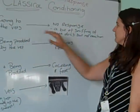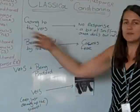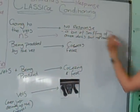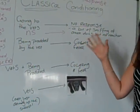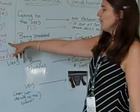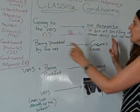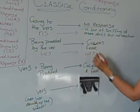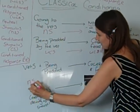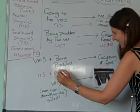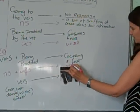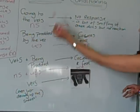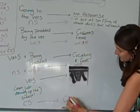Going to the vets to start with produces no response — so that's the neutral stimulus, because nothing is happening. Being prodded by the vet naturally makes the dog fearful, so it's not going to be conditioned because it's a natural, physiological response — that's the unconditioned stimulus, which produces the unconditioned response. Neutral stimulus plus unconditioned stimulus equals unconditioned response. Eventually, the vet — which normally produces no response — becomes the conditioned stimulus, and the conditioned response is the fear. And that's classical conditioning.